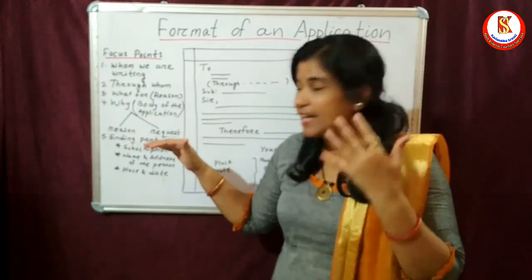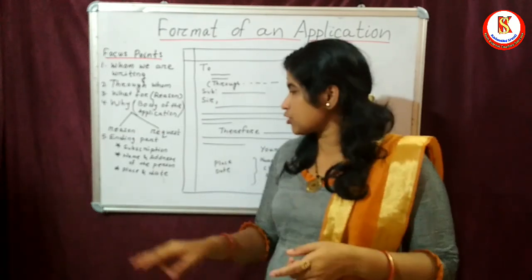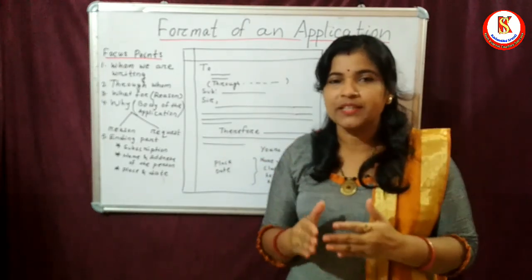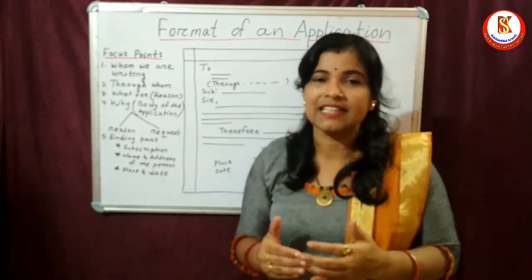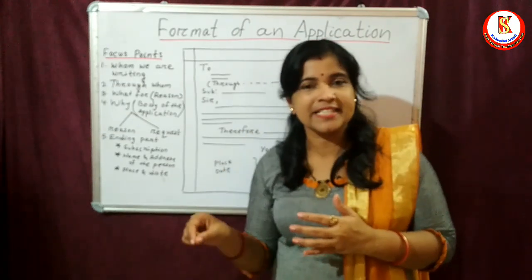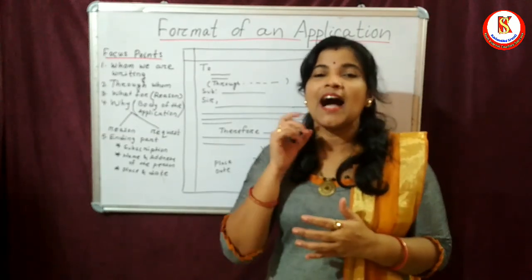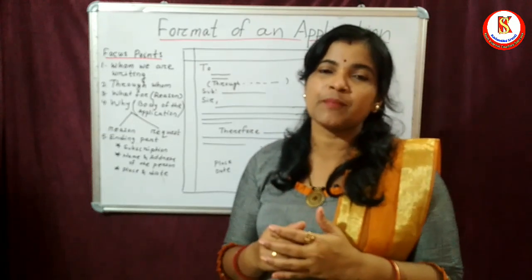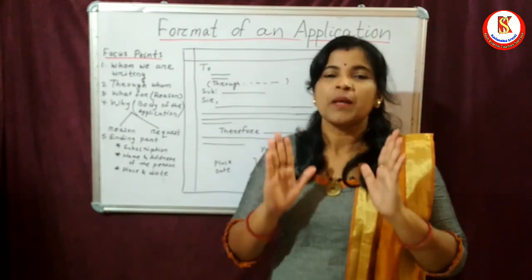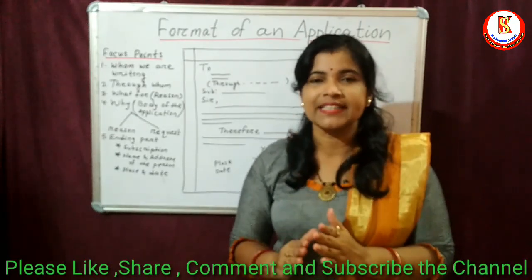The fifth and final focus point is the ending part. Here we have different things to mention. First is the subscription — for example, 'Yours obediently' or 'Your obedient student.' Then come the details of the applicant — who is writing the application — written on the right side. On the left side, we mention the place and date: when and from where we are writing the application. These are the five basic focus points of any application.